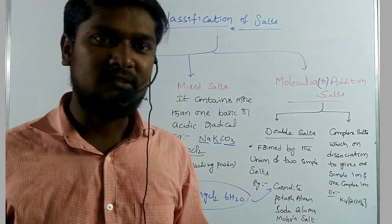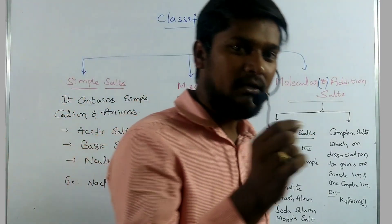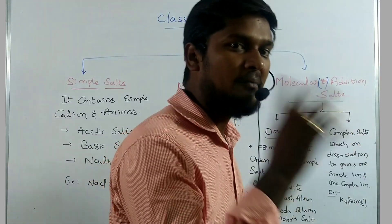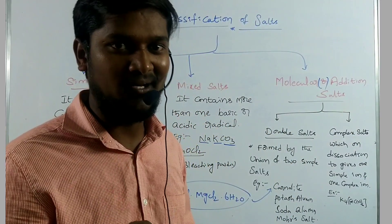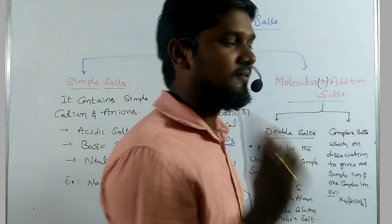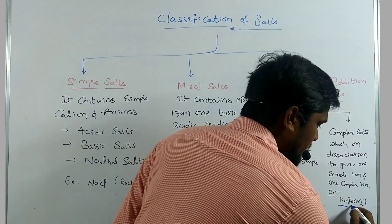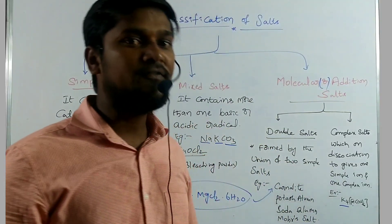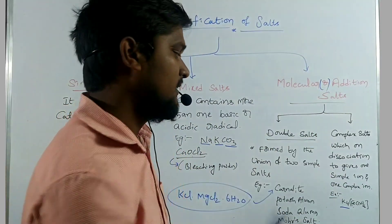Complex salts, on dissociation, give one simple ion and another complex ion. The best examples of complex salts are potassium ferricyanide and potassium ferrocyanide.